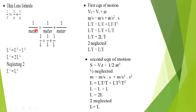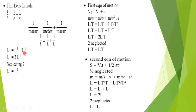The lens formula is 1/f = 1/p + 1/q, where f is the focal length, p is the object distance, and q is the image distance. All three are distances, so all have units of meter, symbol L. Taking their inverse gives L⁻¹, L⁻¹, and L⁻¹. Adding them gives 2L⁻¹ = L⁻¹ + L⁻¹, and we get the same value on both sides, hence left-hand side equals right-hand side.